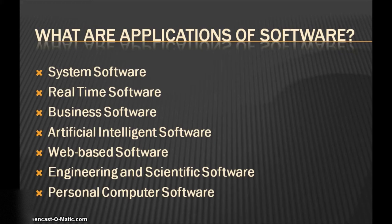Artificial intelligence software's main task is to add certain degrees of intelligent features to the mechanical hardware to get the work done in a responsive manner. For example, expert systems.